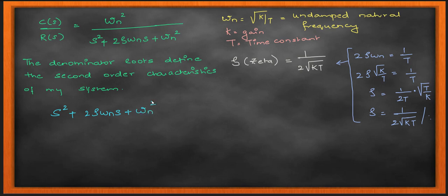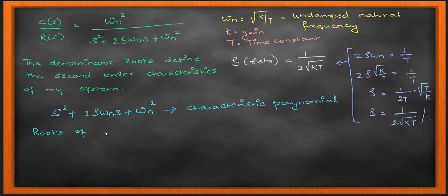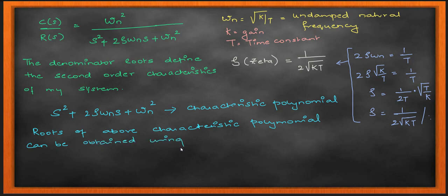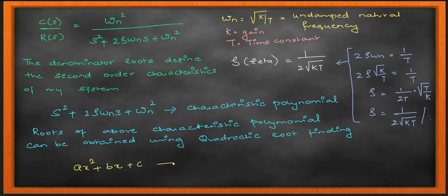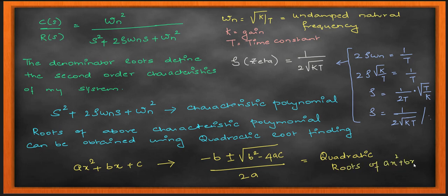We are going to work with this transfer function to obtain the time response. The denominator term is s-squared plus 2*zeta*omega_n*s plus omega_n squared — that is a quadratic polynomial, the characteristic polynomial that defines the behavior of your second order system. It will have two roots, and these two roots define the system properties. They tell us a great deal about how your system is going to respond over time, and that is why this is very, very important.